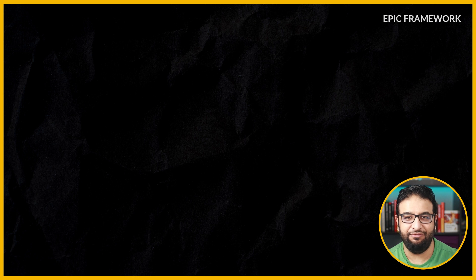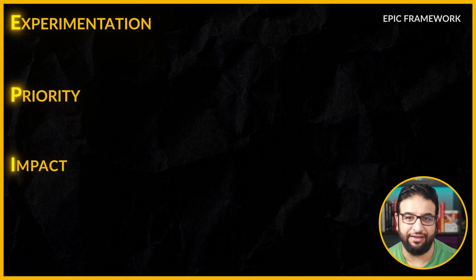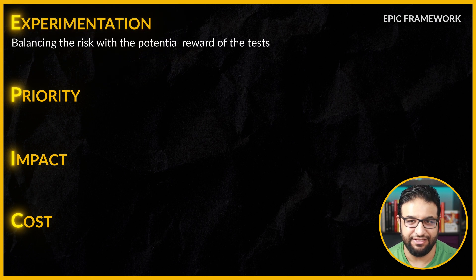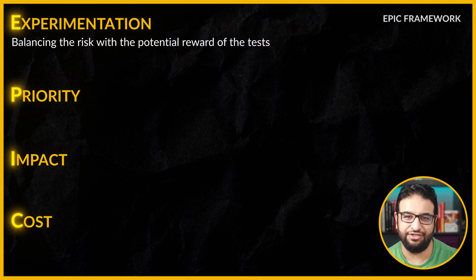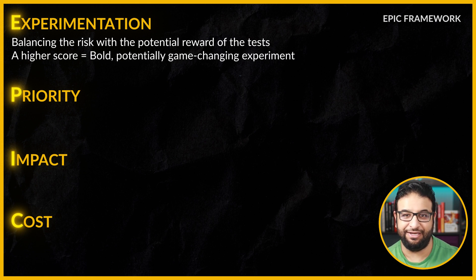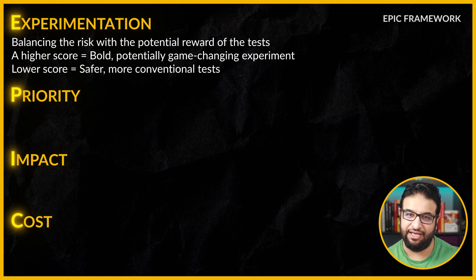The EPIC framework stands for experimentation, priority, impact, and cost. First up: experimentation. This is all about balancing the risk with the potential reward of the tests we run. A higher score here means we are looking at a bold, potentially game-changing experiment, while a lower score represents safer, more conventional tests.